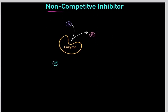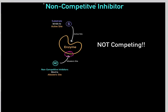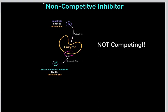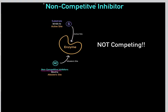Now let's talk about non-competitive inhibitors. We know how enzymes work — the substrate binds to the enzyme's active site and is converted into product. Non-competitive inhibitors bind to an allosteric site, which is a different region of the enzyme. Substrates bind to the active site, while non-competitive inhibitors bind to the allosteric site. So they are not competing — the substrate binds to the active site, the non-competitive inhibitor binds to the allosteric site — hence 'non-competitive inhibitor.'